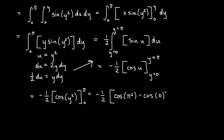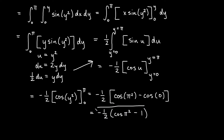So we'll get negative 1 half times (cosine of pi squared minus 1). You could distribute the negative 1 half in there if you want, but we'll go ahead and leave it like that as our answer.